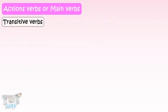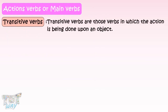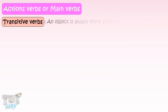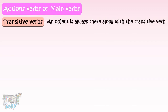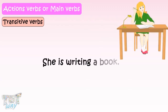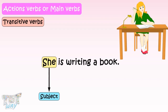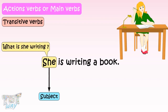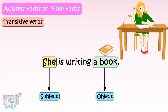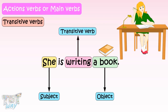Transitive verbs are those verbs in which the action is being done upon an object. An object is always there along with the transitive verb. For example, 'She is writing a book.' Here, the subject is 'she,' and she is writing a book, so 'a book' is the object. Writing is a transitive verb, as the action of writing is done upon the object, book.